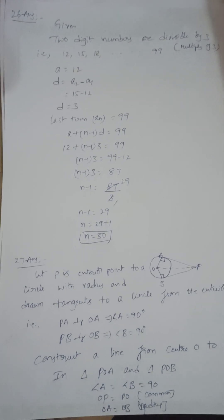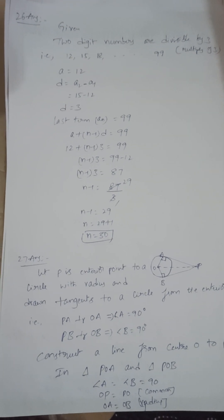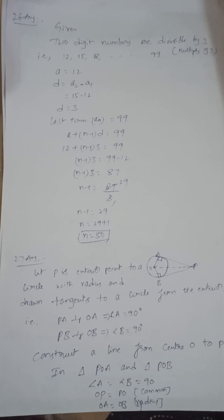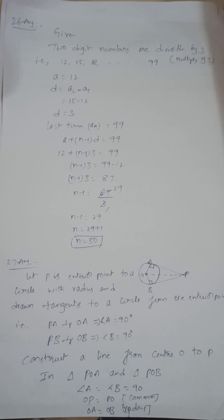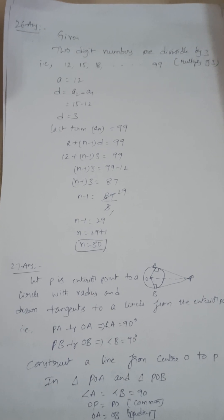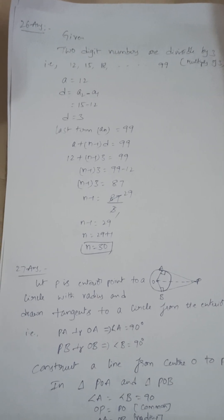Next, prove that the tangents drawn from an external point are equal. You can find by using RHS congruence rule. When the tangent meets the radius, the angle is 90 degrees. The radius is perpendicular to the tangent.